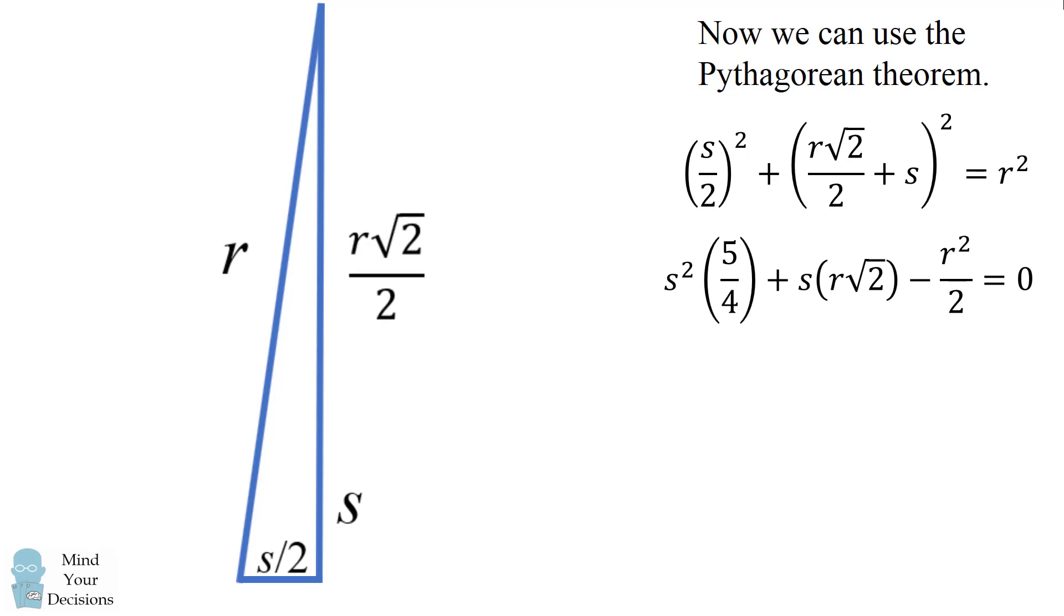We can simplify this equation and we know that r is an unknown constant. So we'll treat this as a polynomial in s. We'll multiply this by 4 and now we have a quadratic in s.